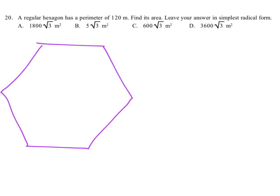So each side measures 20, so the whole perimeter will then be 120, as they gave us, and let's go from the center here and form one of these triangles.